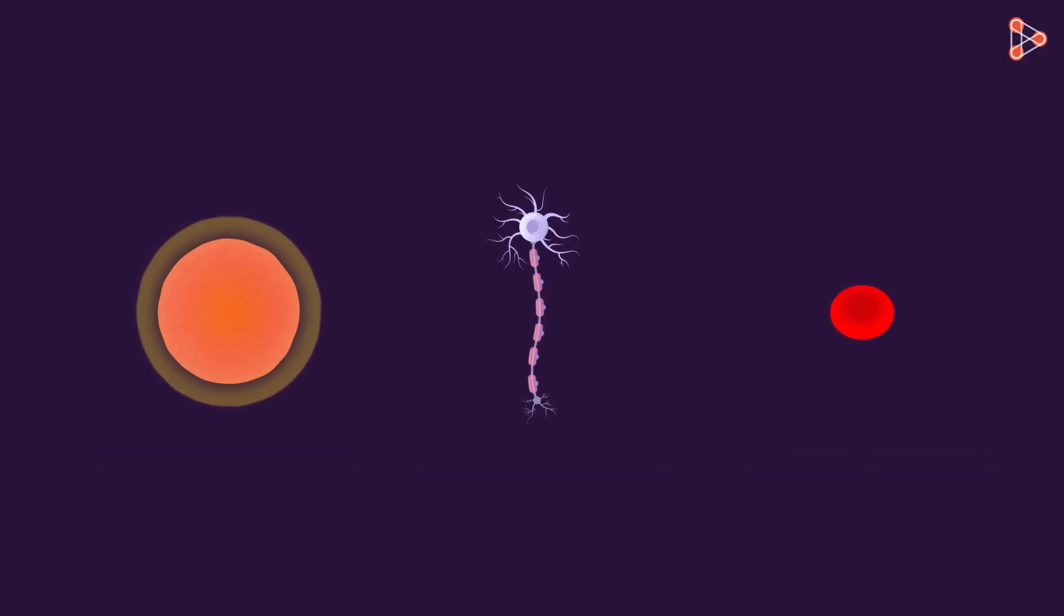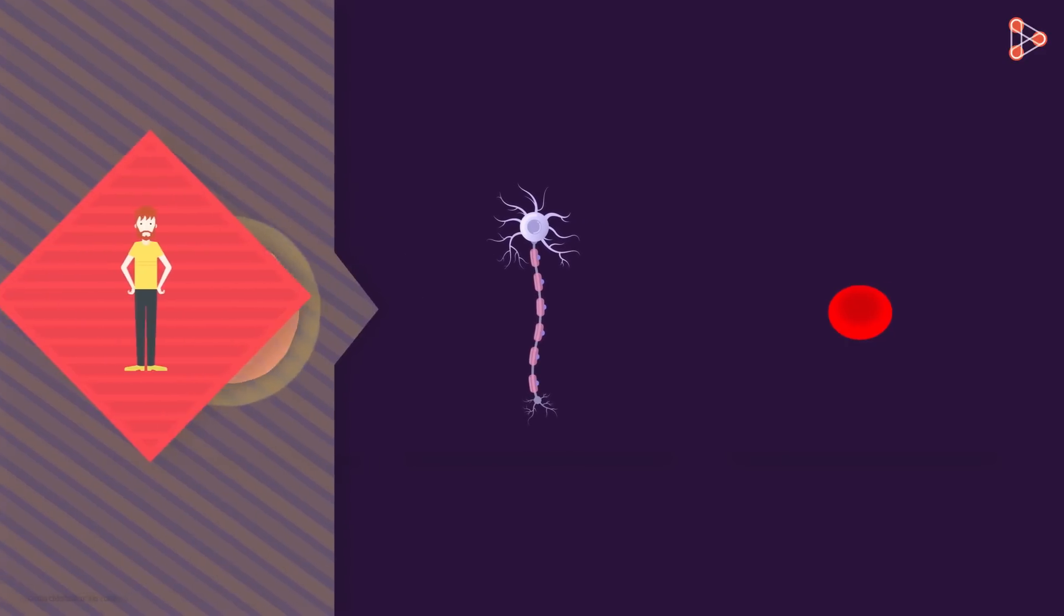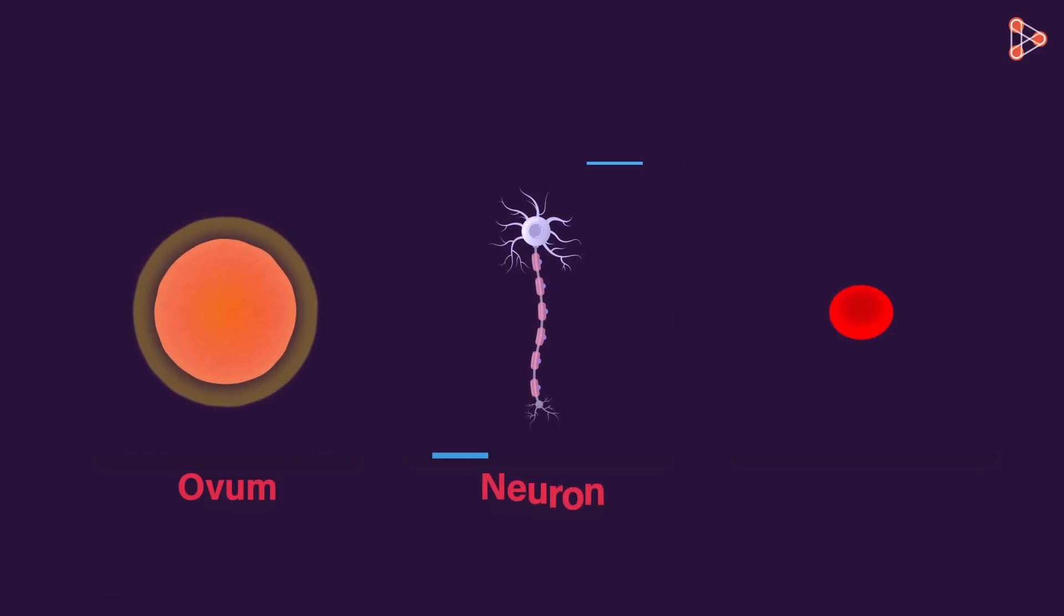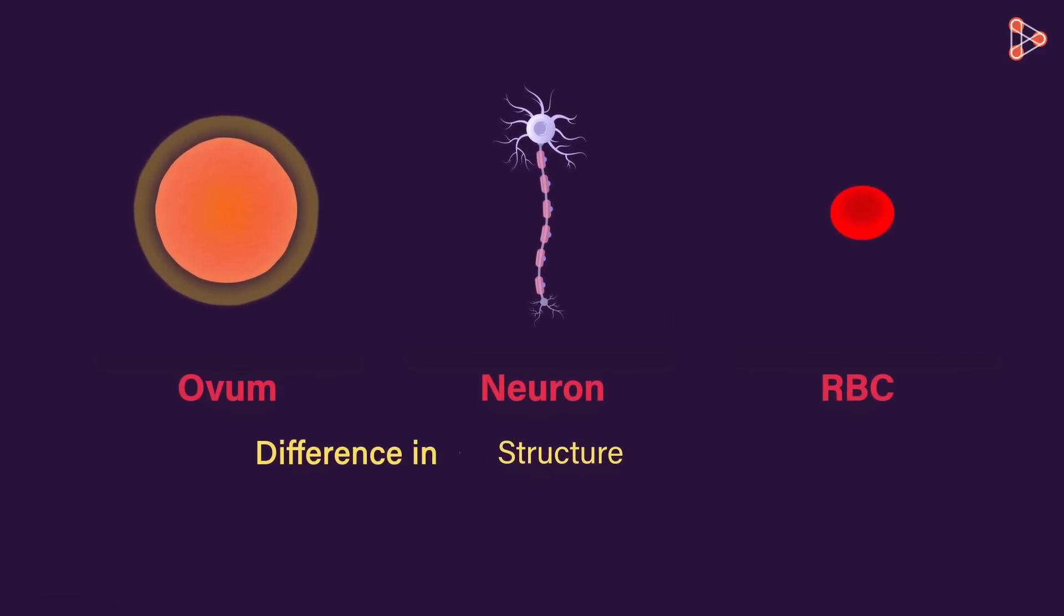Look at these cells for example. These look so different! But astonishingly, all three are a part of our body! This one is an ovum, this is a neuron and the last one is a red blood cell. Their structures, shapes, sizes are totally different from each other and so are their functions.